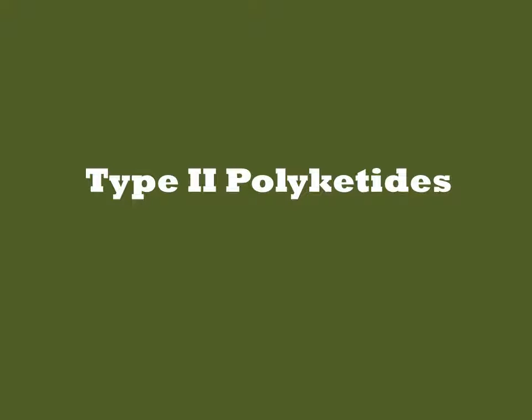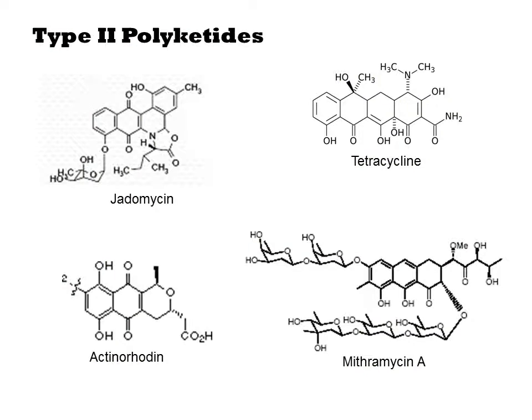There are three classes of polyketides. The simplest to describe are the type 2. The most obvious characteristic of this class is a large carbon skeleton with several fused rings. Many antibiotics such as tetracycline are within this class.